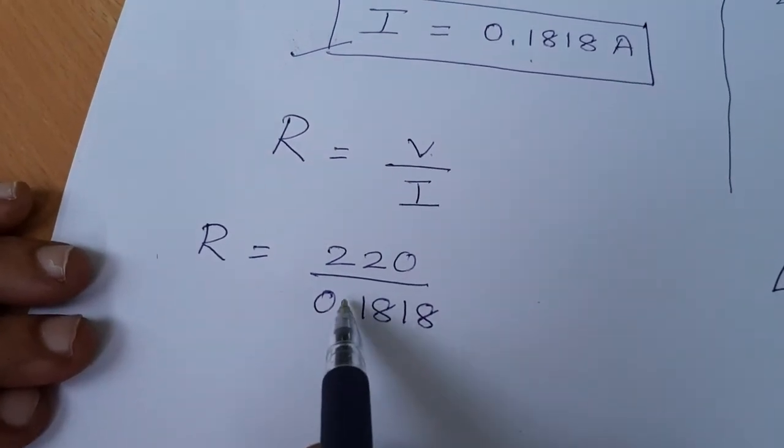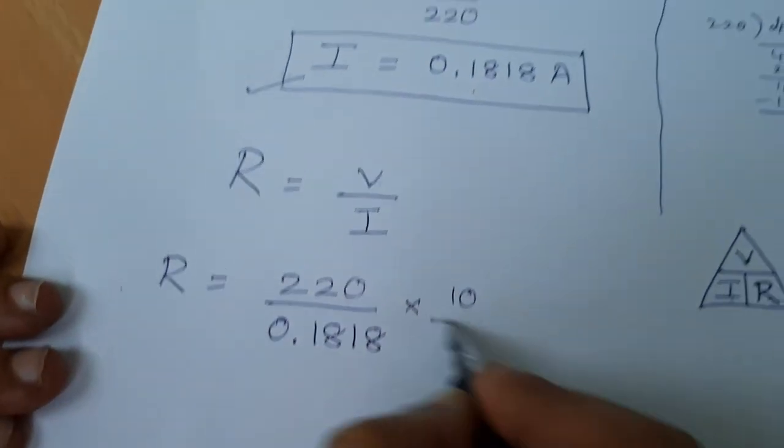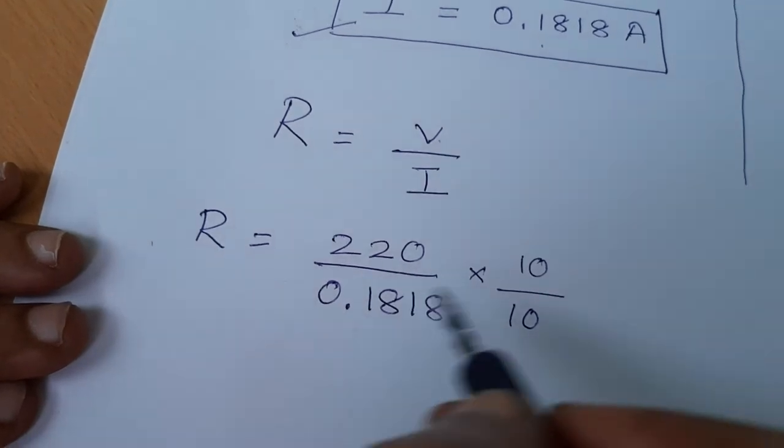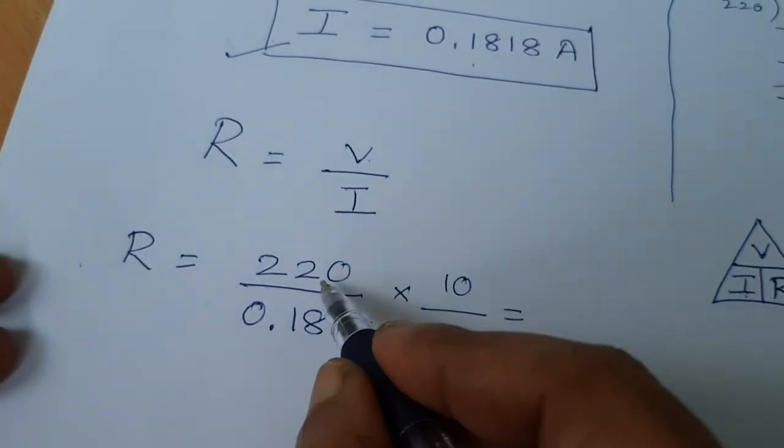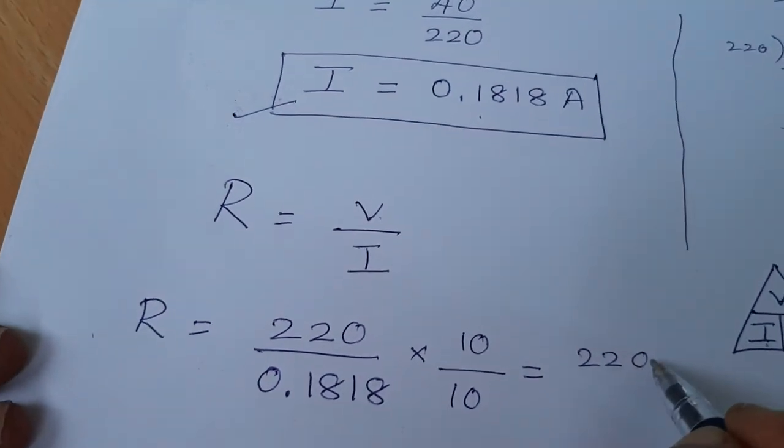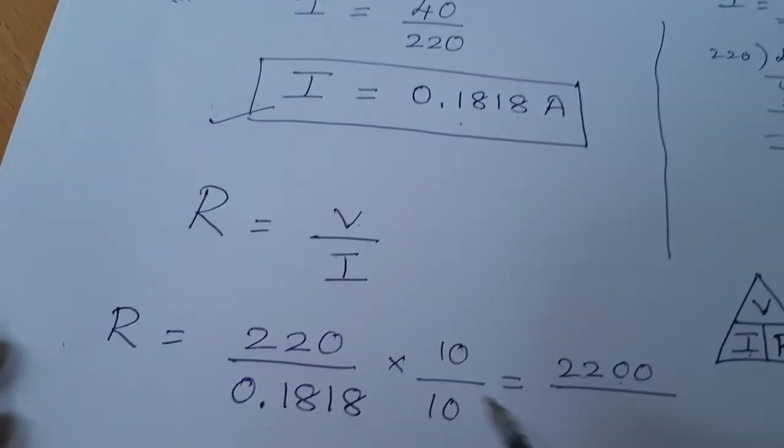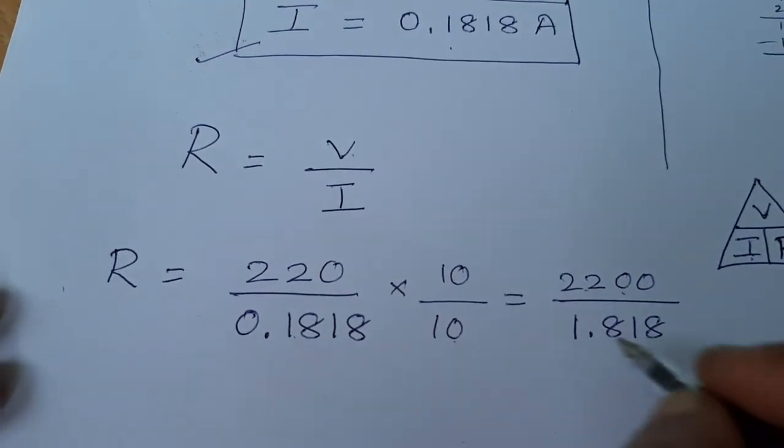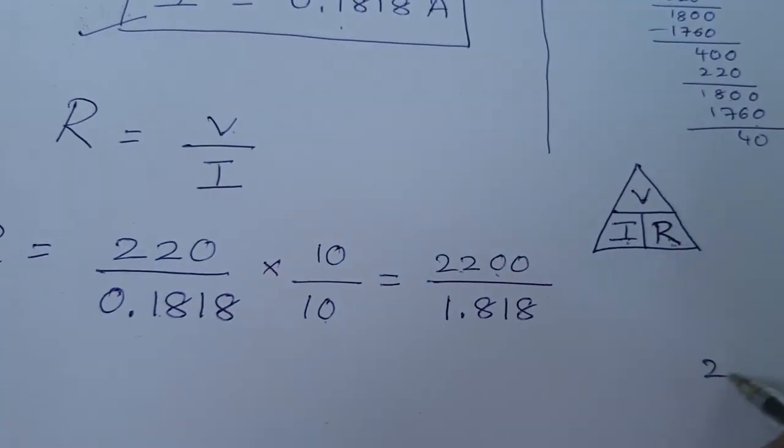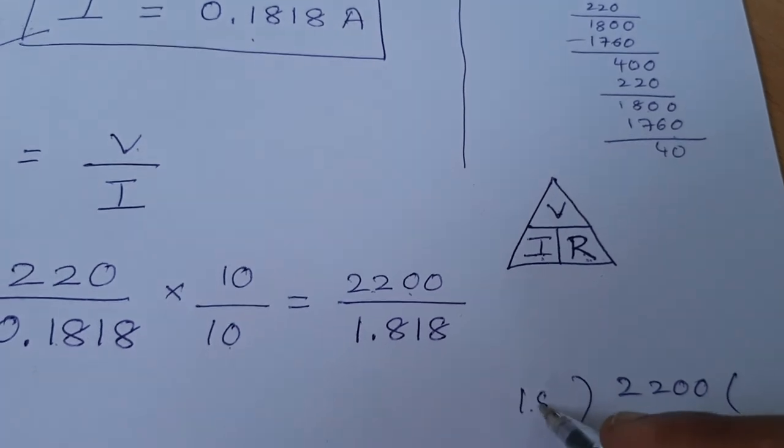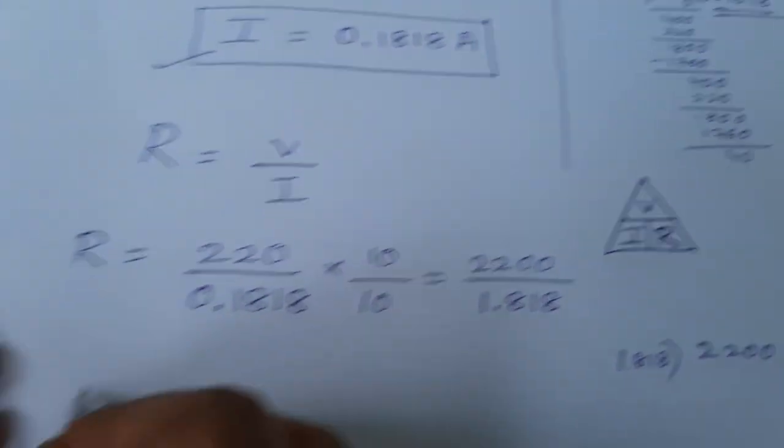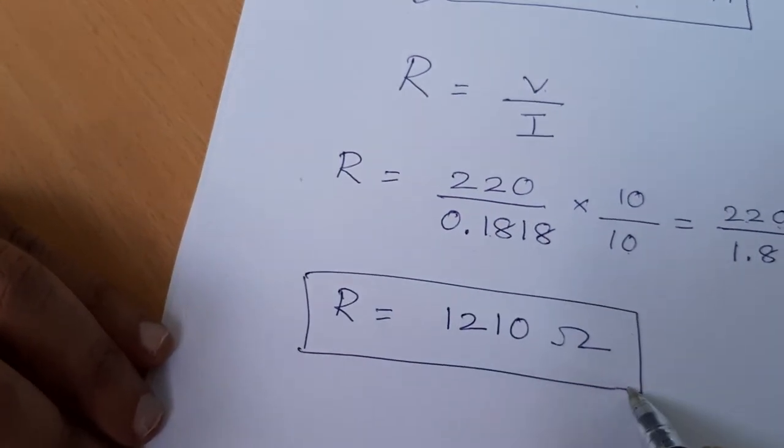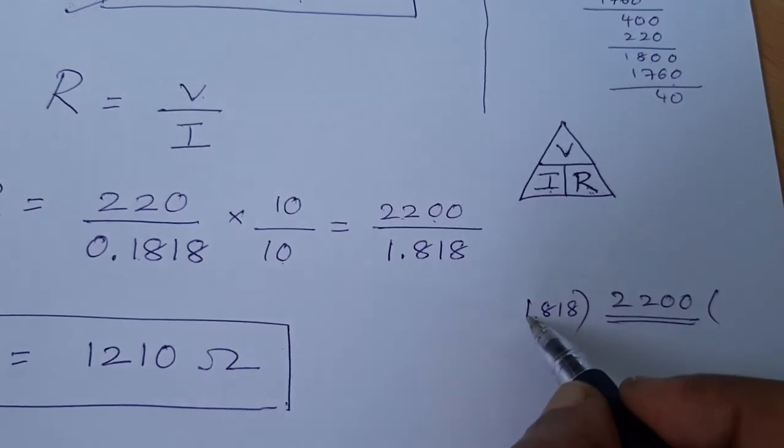Now I need to divide 220 by 0.1818. Here it is a decimal. To make it easy, I multiply both numerator and denominator with 10 to shift the decimal point. I will get 2200 by 1.818. Now it will be easy for me to divide it. When I divide 2200 by 1.818, I will get the answer as R equals 1210 Ohm.